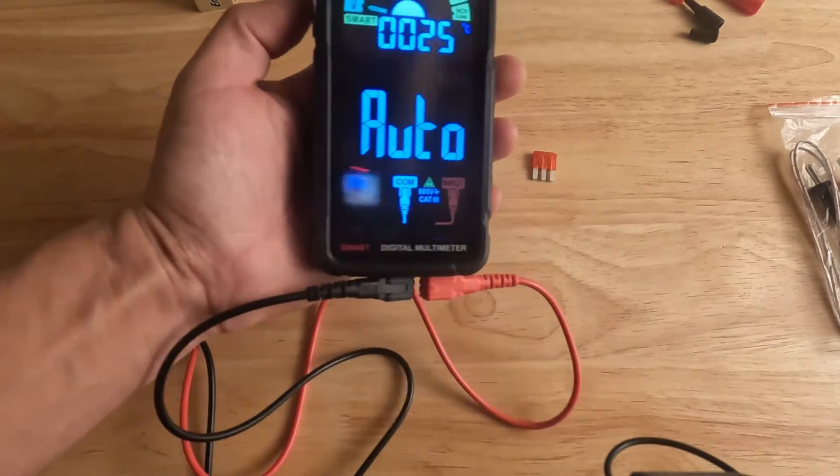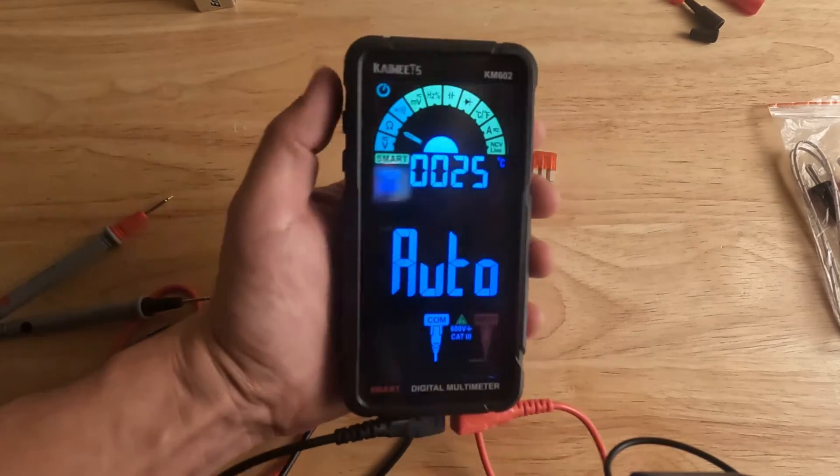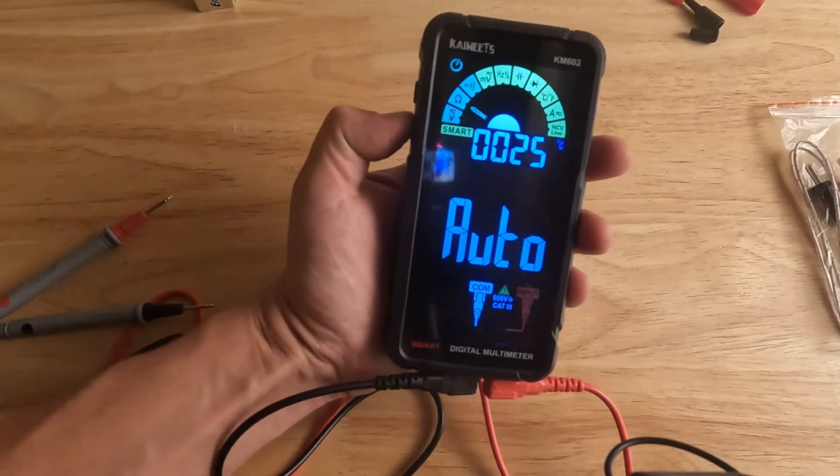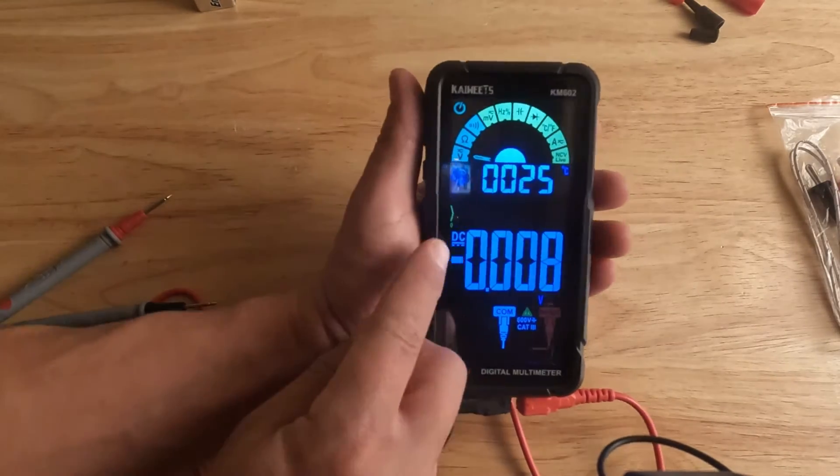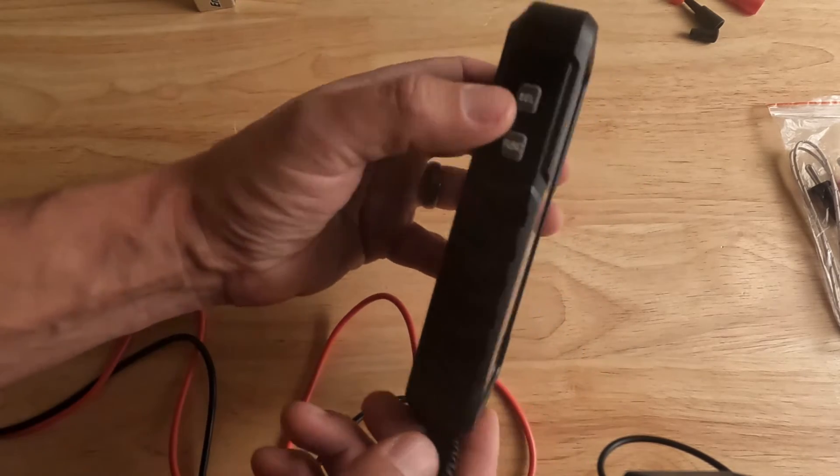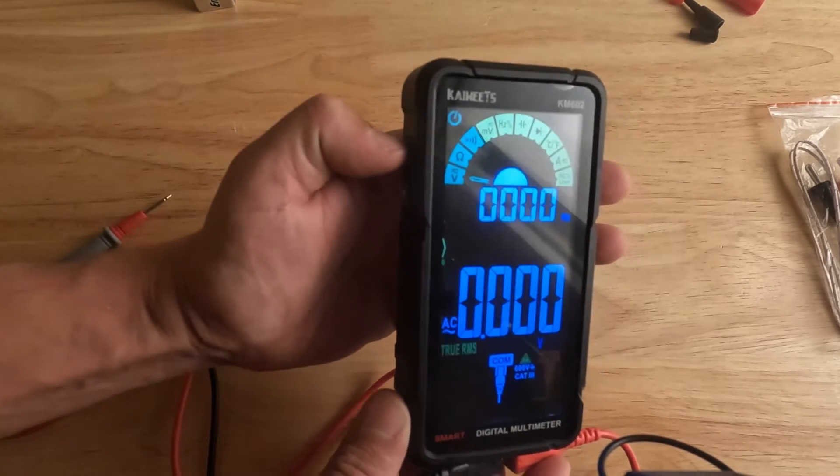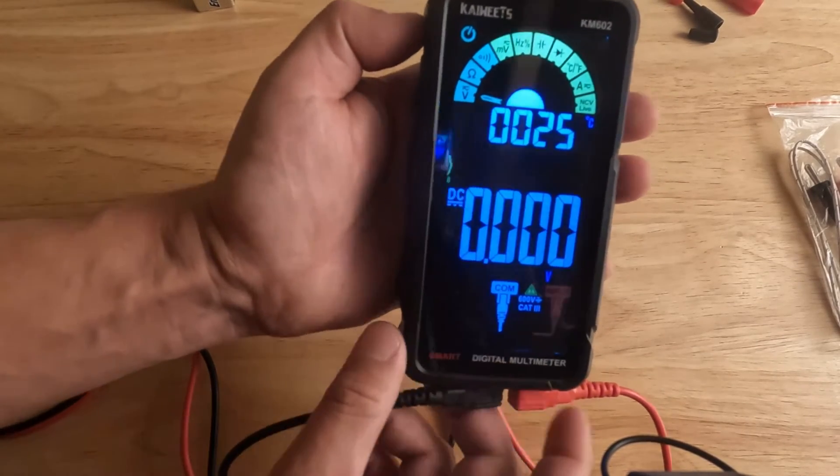Now I'll show you how to manually go over. We're still in the smart mode, but if we hit this function button, that's going to put it into a more manual mode. You can see now we're in volts DC. If we want to switch over to volts AC, we're going to hit this select button while the arrow is pointing to this V, and that's going to switch it over to AC. Switch it back over to DC.